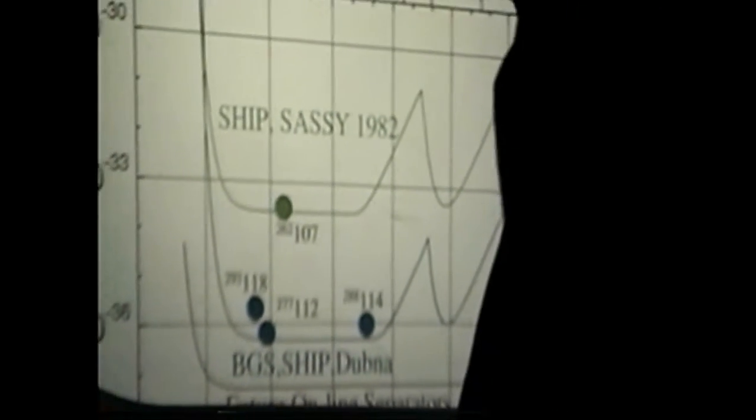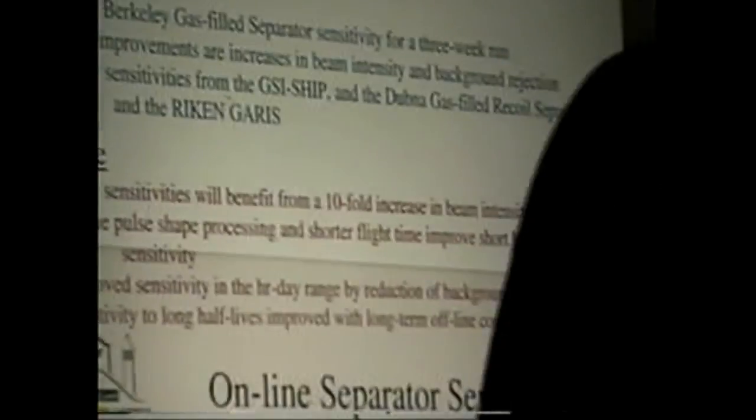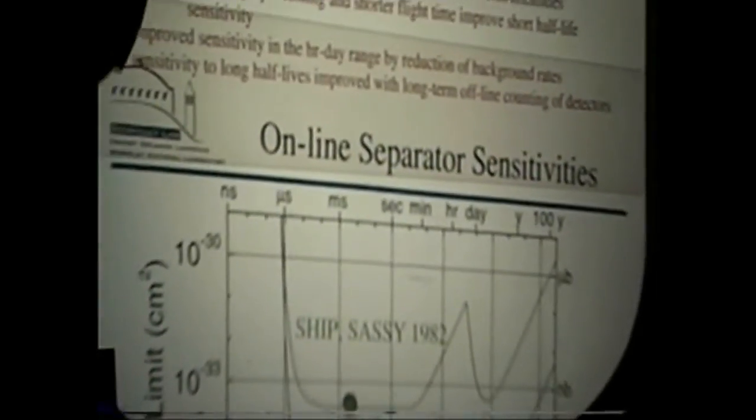So 20 years ago, that was the curve I had on here in green, taken from those super heavy element experiments in 1982. I combined the curves from both the ship and SASE. The microsecond range at the short end is limited by flight time through the separator, about a microsecond, and also the pulse processing electronics.